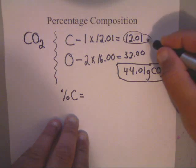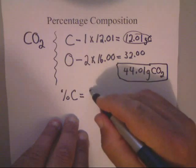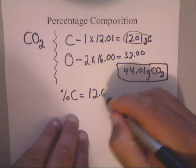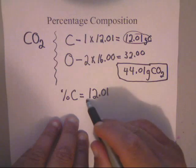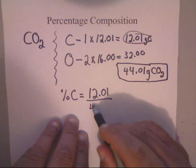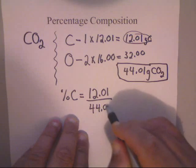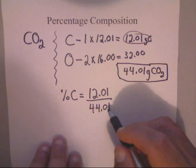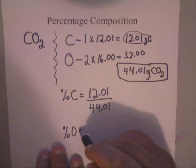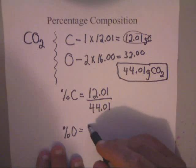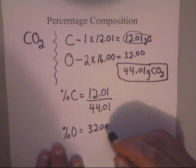And you're going to divide that by the total, which was 44.01. To get the percentage of oxygen, you'll do the same thing. You'll take the 32.00 and divide that by 44.01.